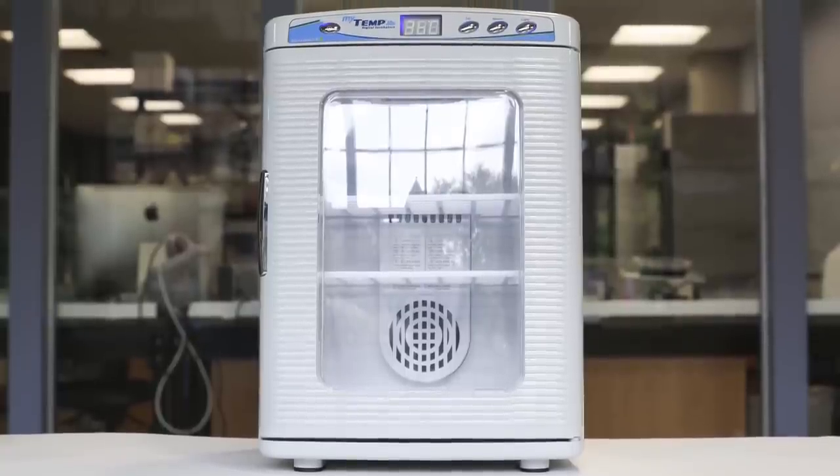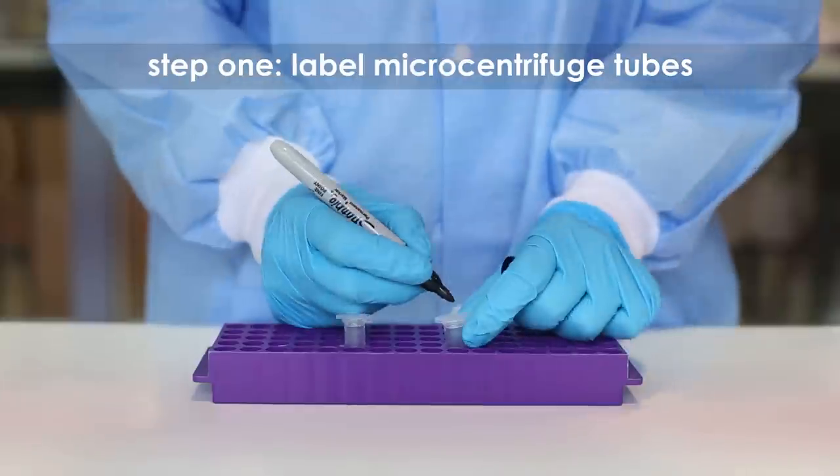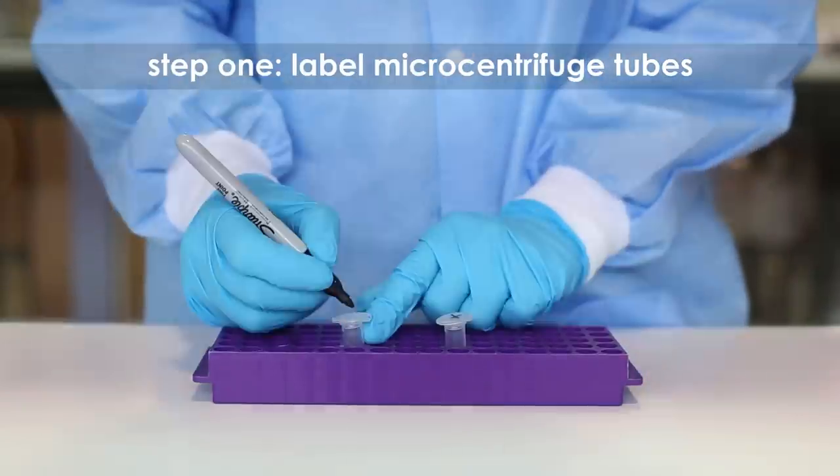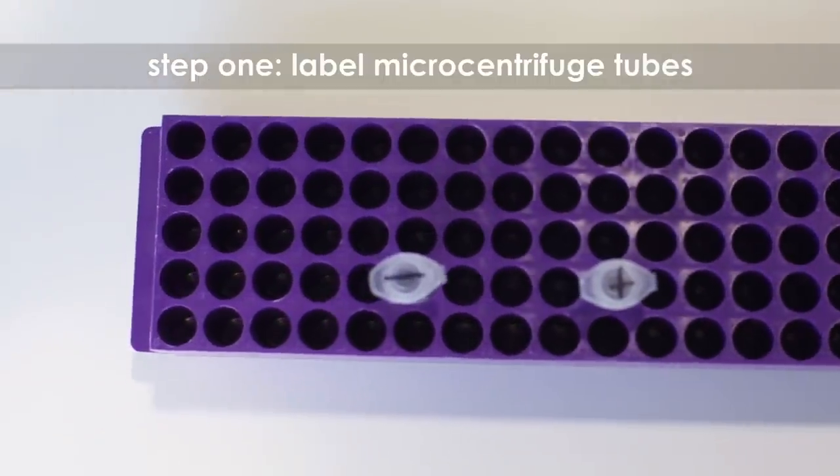Step one: label one microcentrifuge tube plus DNA and a second microcentrifuge tube minus DNA.